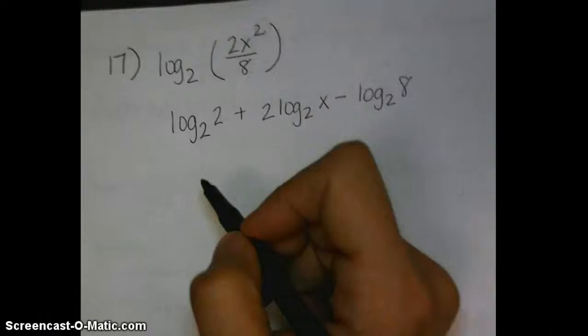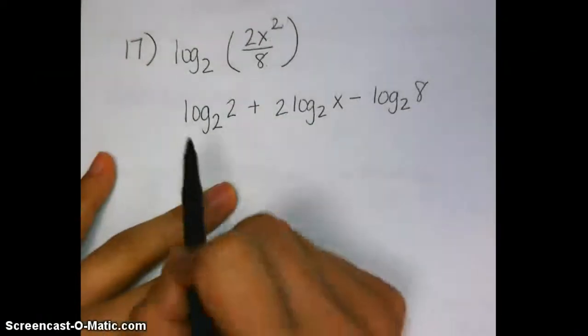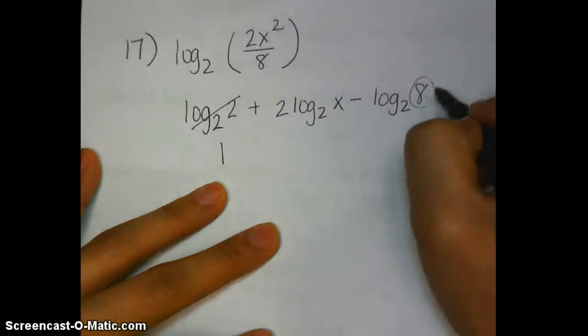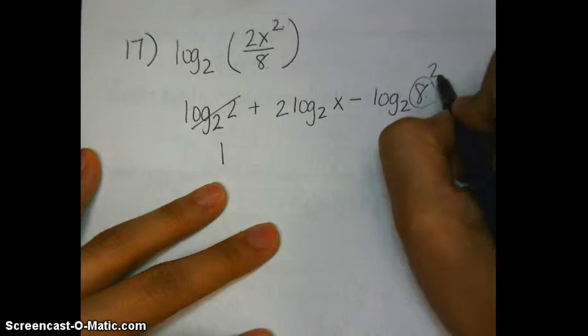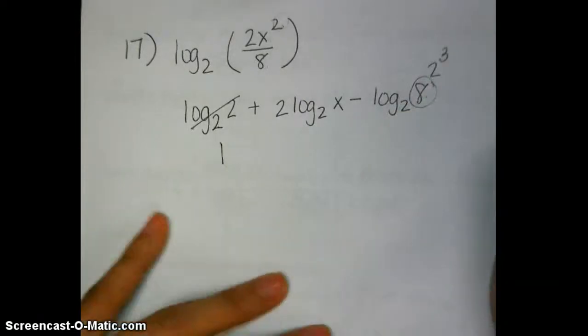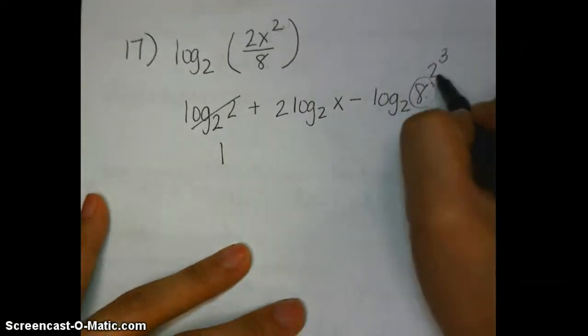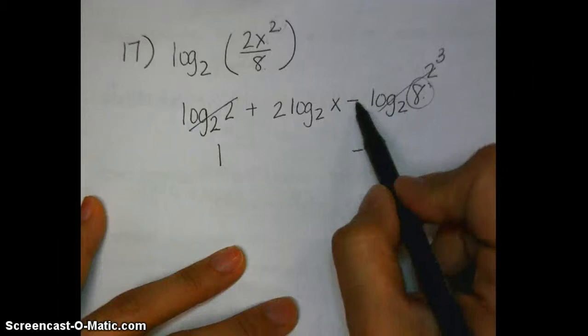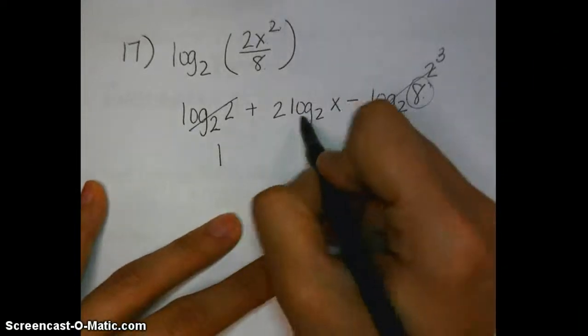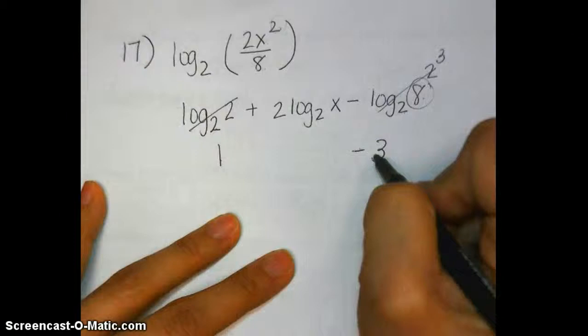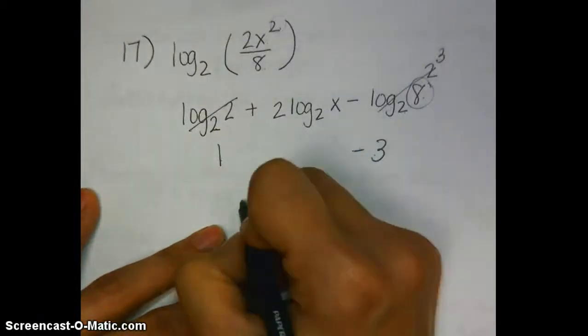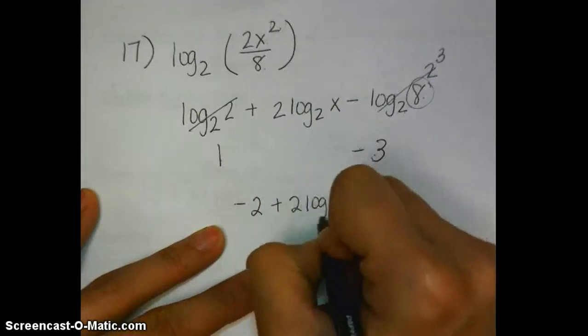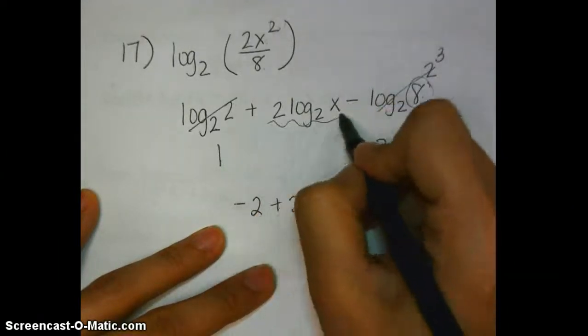All right, from there we should simplify some more because this cancels to 1. But over here, I notice that 8 can really be rewritten as 2 to the third power. And if I rewrite it like that, then I notice log base 2 and this base 2 cancels and I'm left with 3. And it's negative because there is a negative sign in front of the log there. So now I have two numbers that I can combine like terms with. So that's negative 2 plus 2 log base 2 of x. This didn't change at all so I'm just carrying it down.